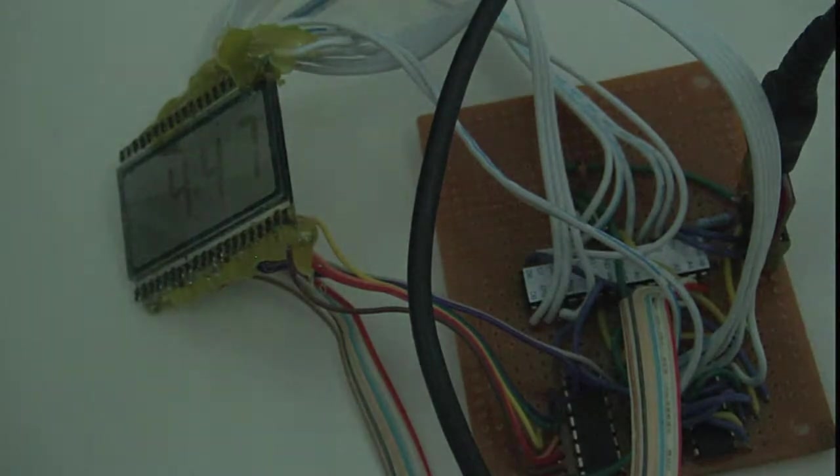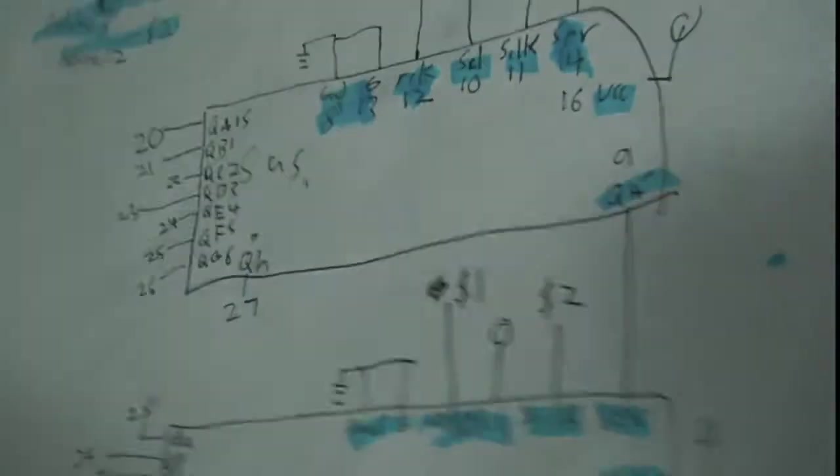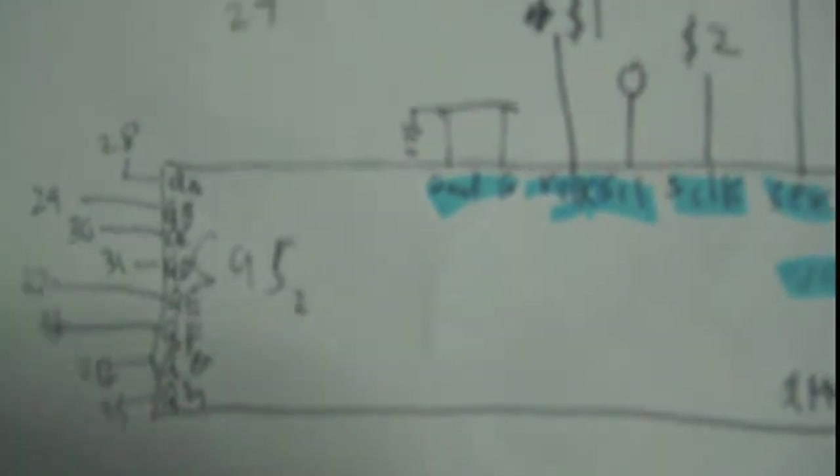And then the rest you would connect to standard. And on the second shift register, it's all the same, except for pin 14 is connected to pin 9. I can show you on this little diagram here. So you can see that. These are all the data connections, these are all the parallel out connections here.